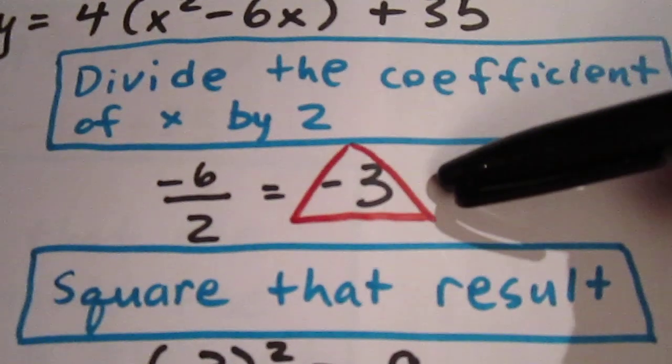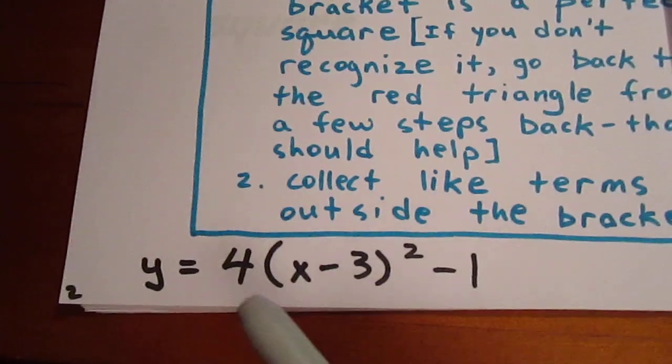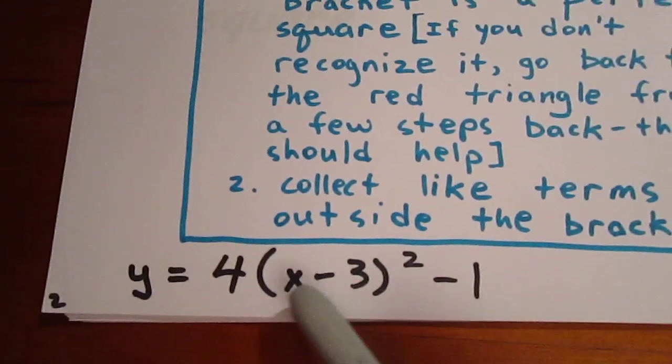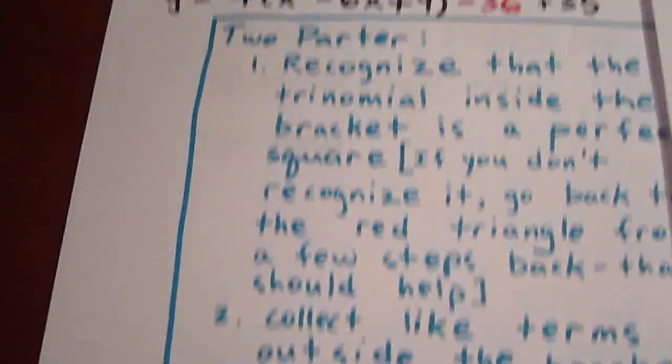Remember, we said we would get back to it. It was -3. Well, if you do it correctly, that -3 will appear in here. It's (x-3)² bracket squared. But we're getting ahead of ourselves.